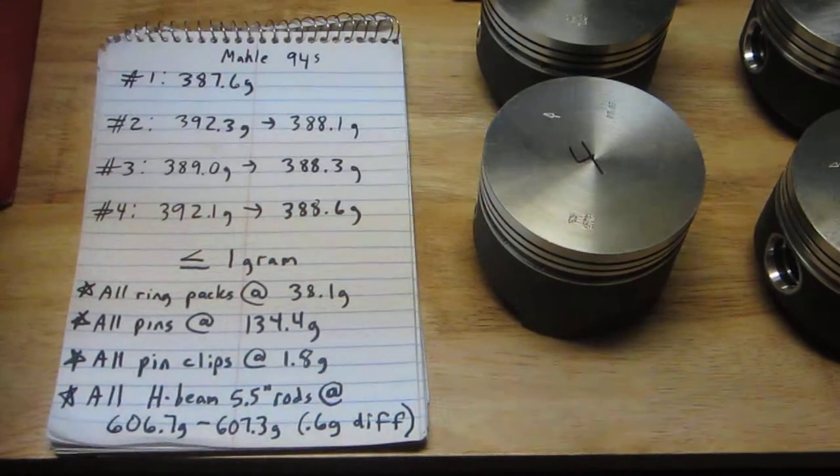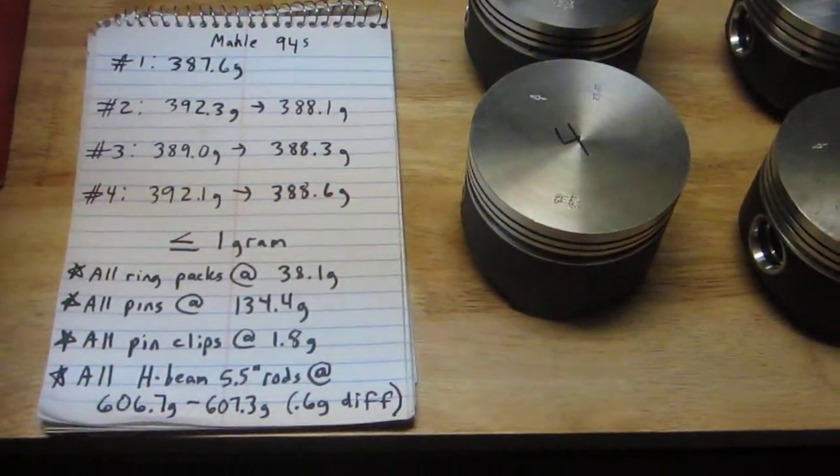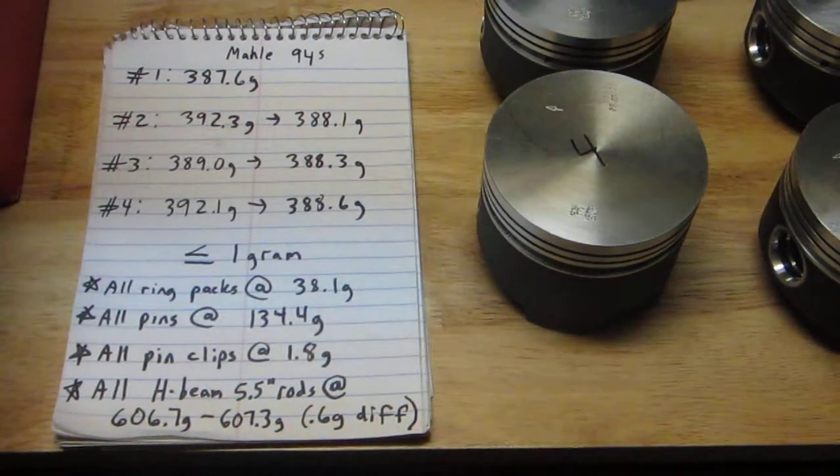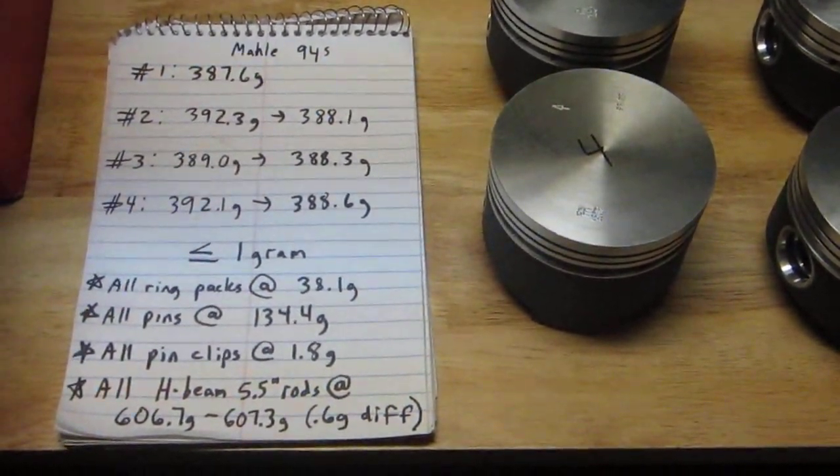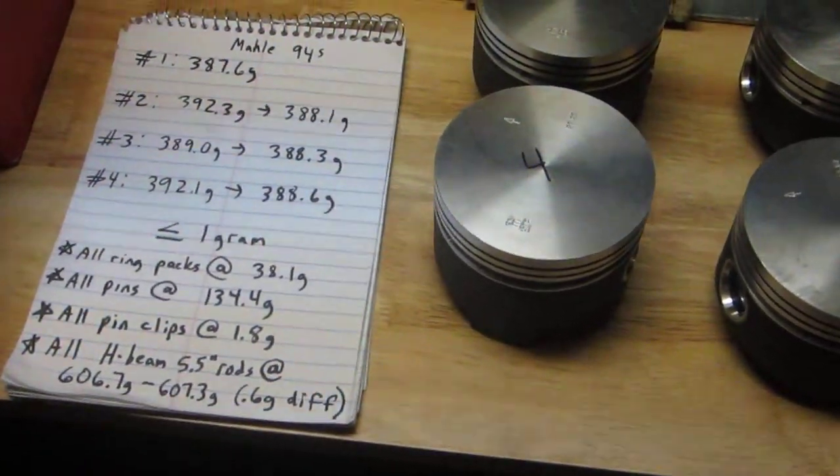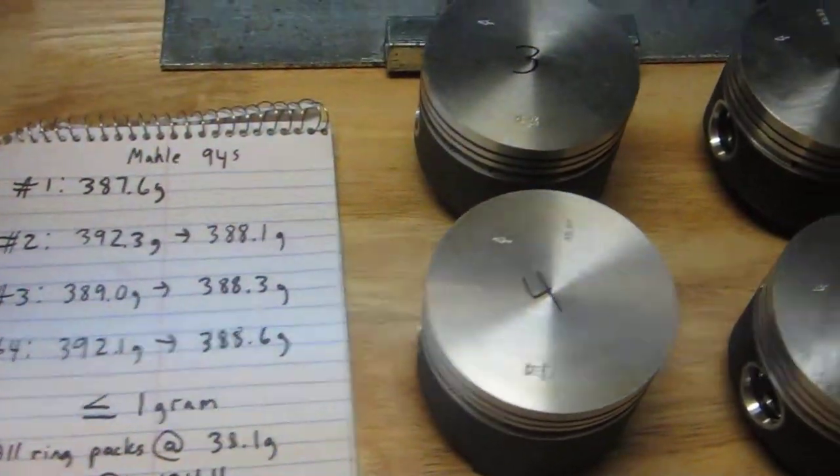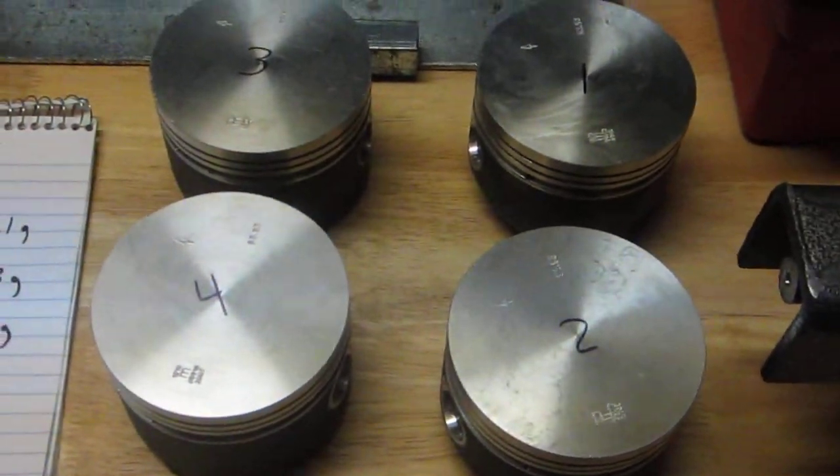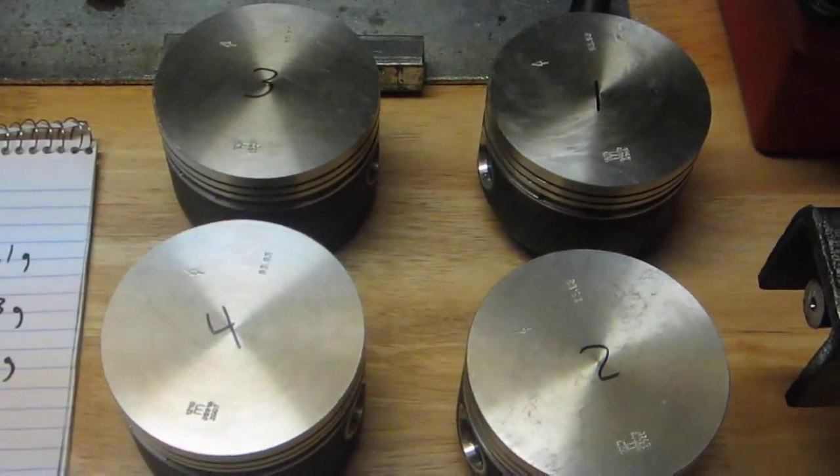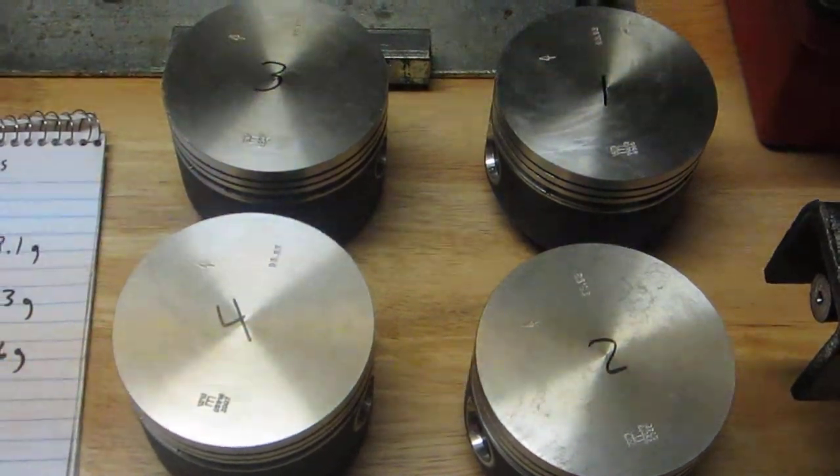The rotating assembly includes the crankshaft, connecting rods, pistons, piston pins, piston rings, etc. Generally, depending on the type of engine going in a Volkswagen and the intended usage of it, there are specifications on this concept of balancing.